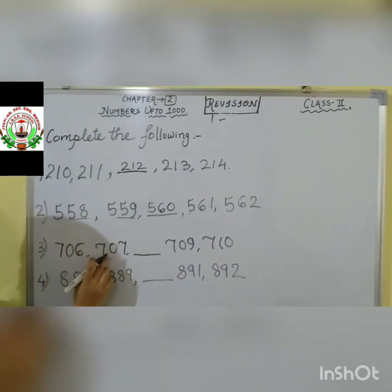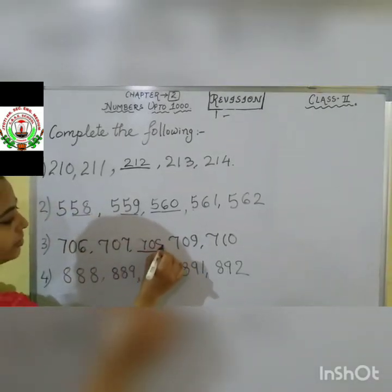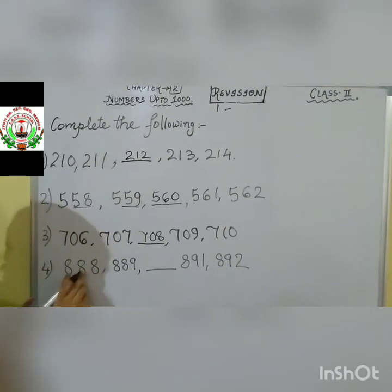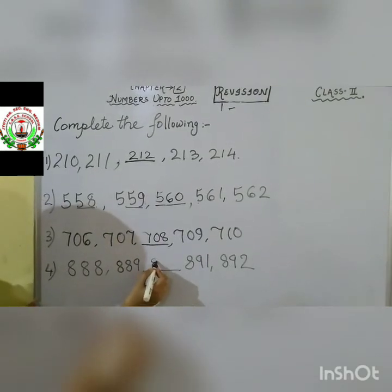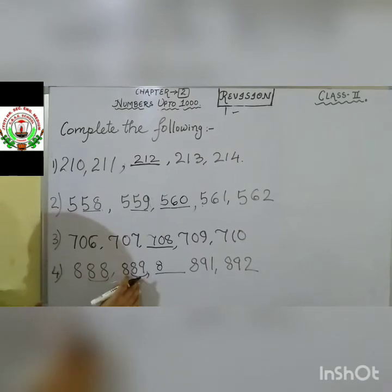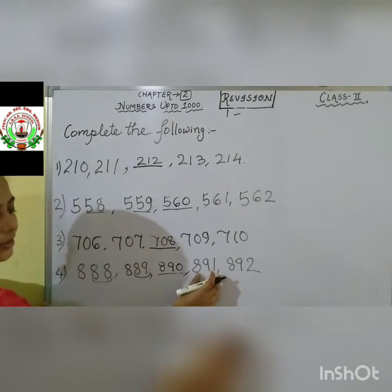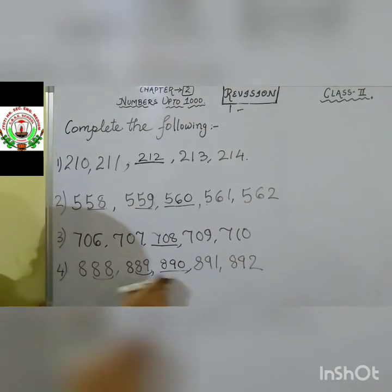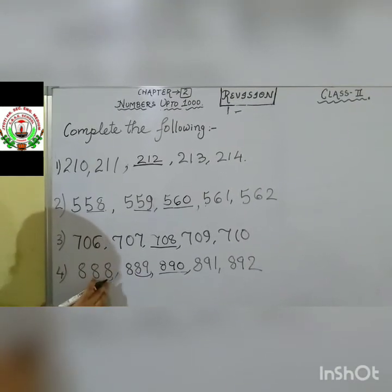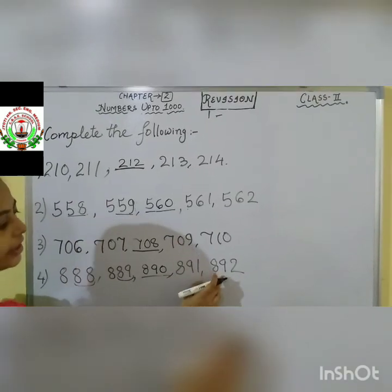Next question: 706, 707, blank, 709, 710. After 707 which number comes? 708. Then 709 given, 710 also given. Next: 888, 889, blank, 891, 892. After 889 which number is coming? Let us see: 88, then 89, then after 89 which number is coming? 90. So we write 890. Then 891 given, 892 also given. In this way, you have to fill the missing numbers. See the hundreds place, and if confused with the numbers, look at the tens and ones place together and count.